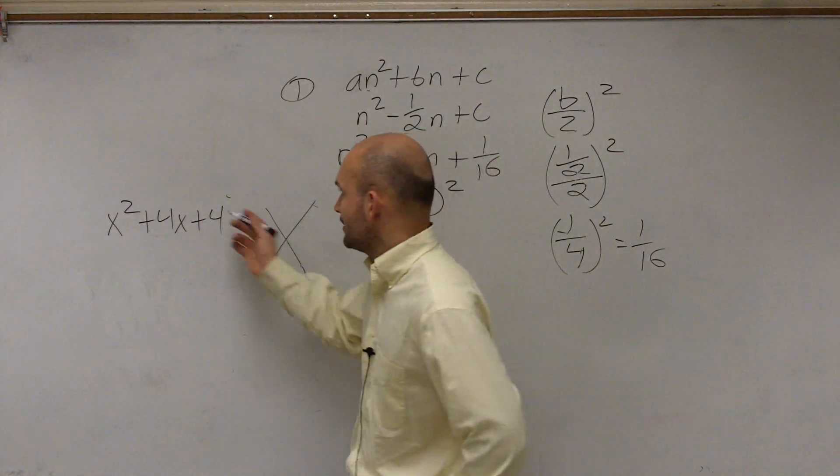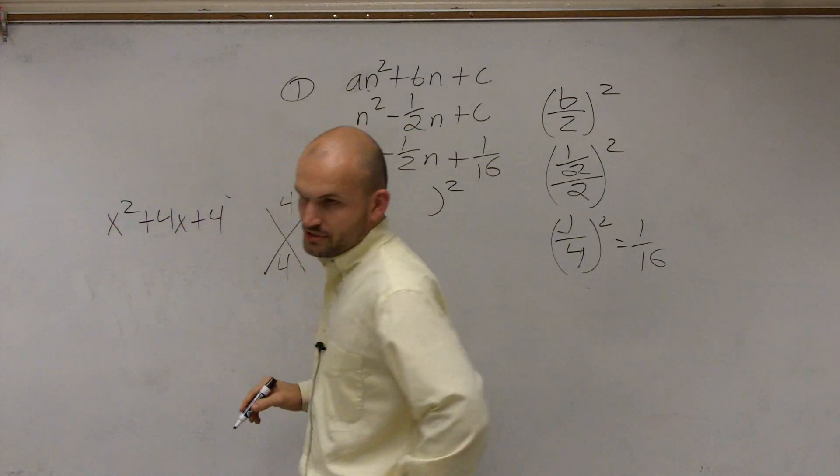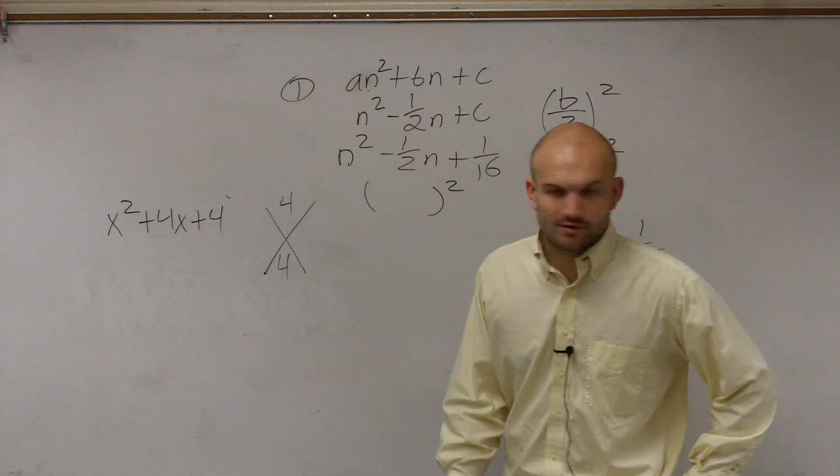Let's go through it the long way. a times c is 4. What two numbers multiply to give you 4 but add to give you 4? 2 and 2.